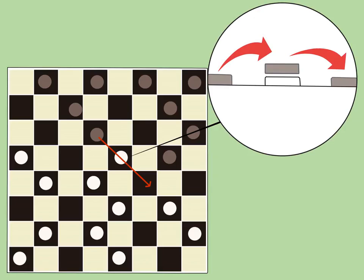Trade checkers when you're ahead. It's obvious that trading one of your checkers for two of your opponent's checkers benefits you, but even trading one for one is useful if you had more checkers to begin with. For example,